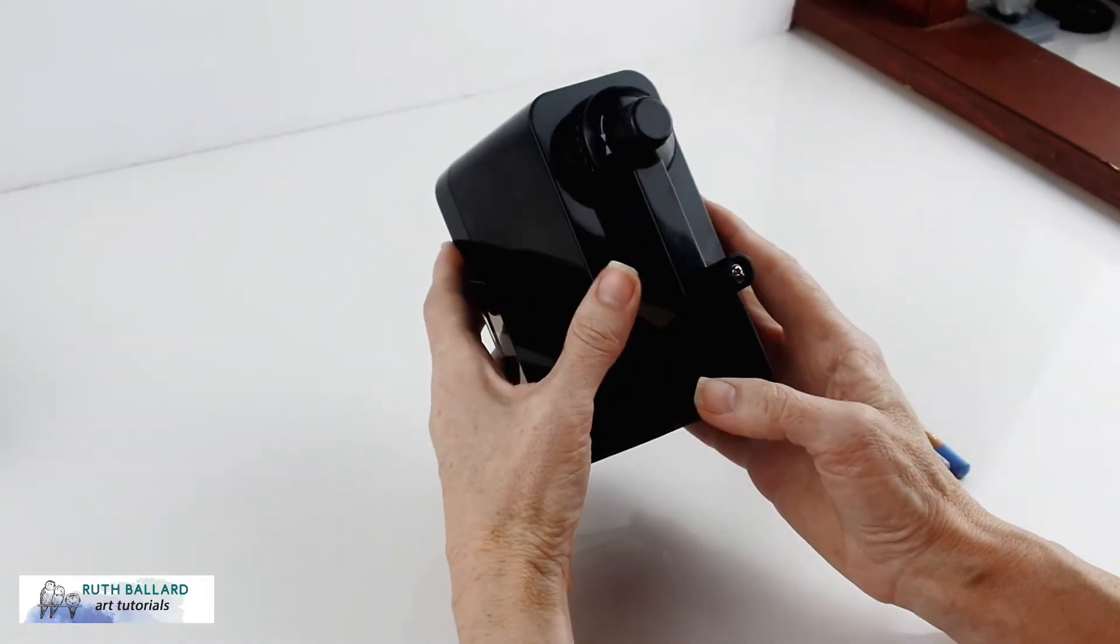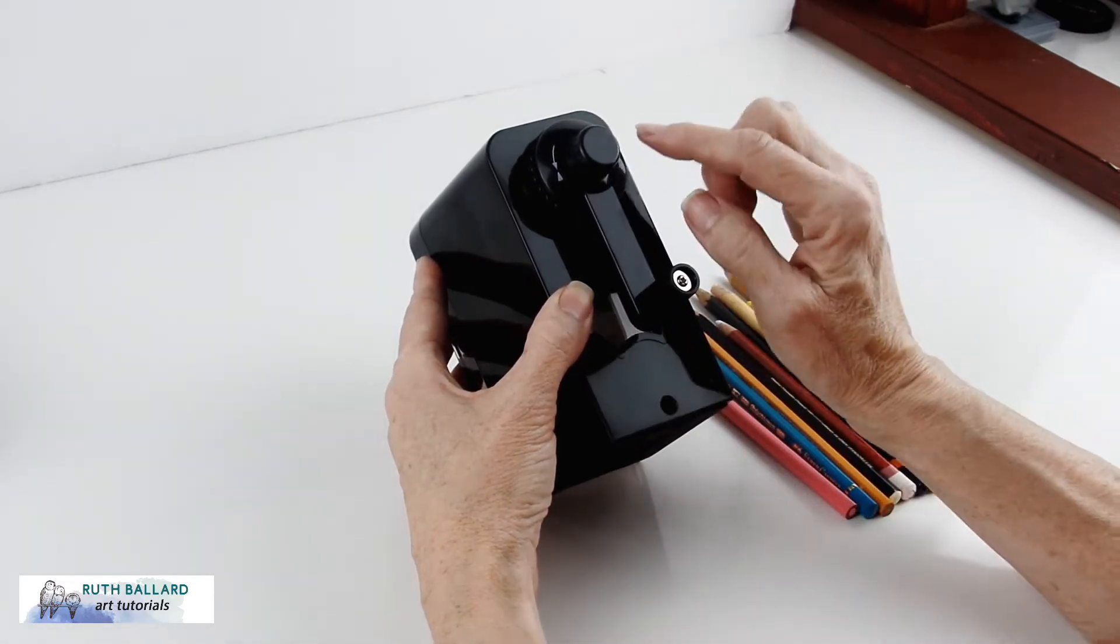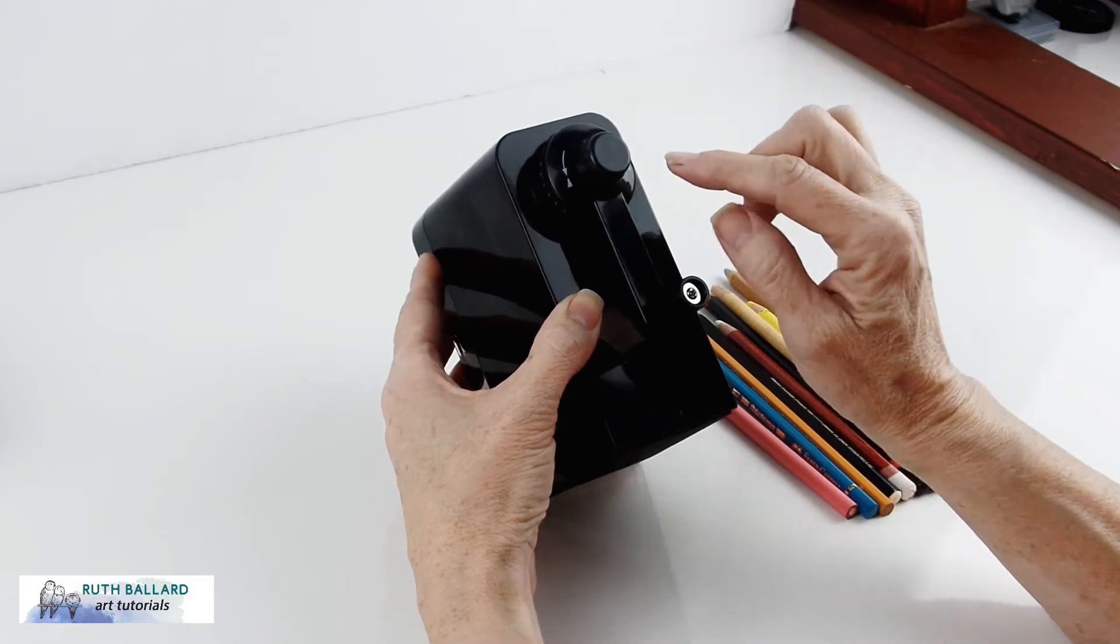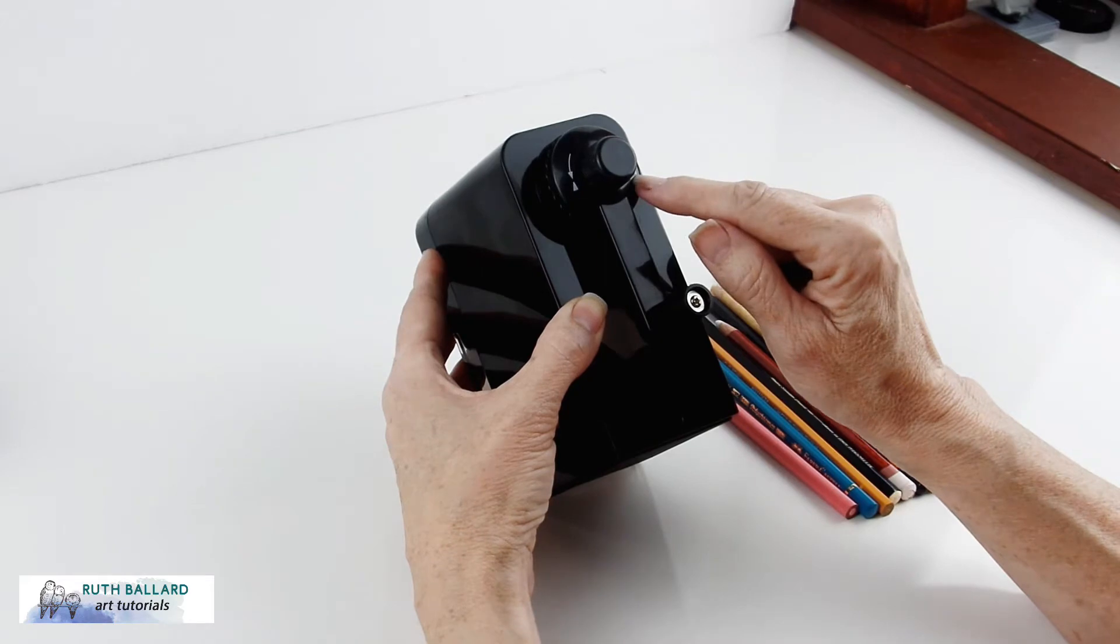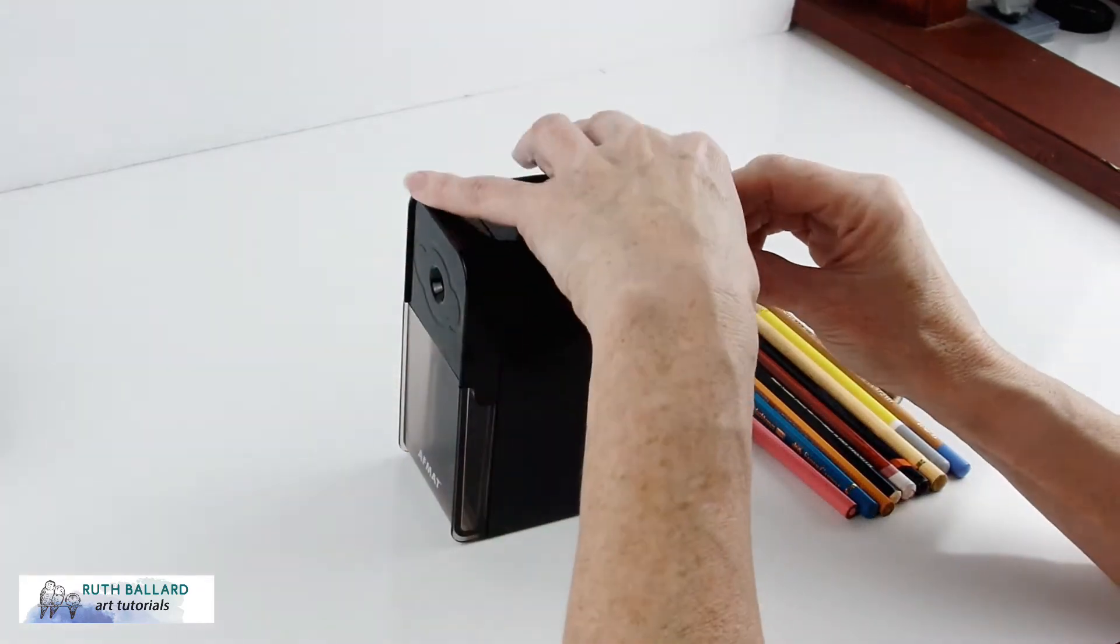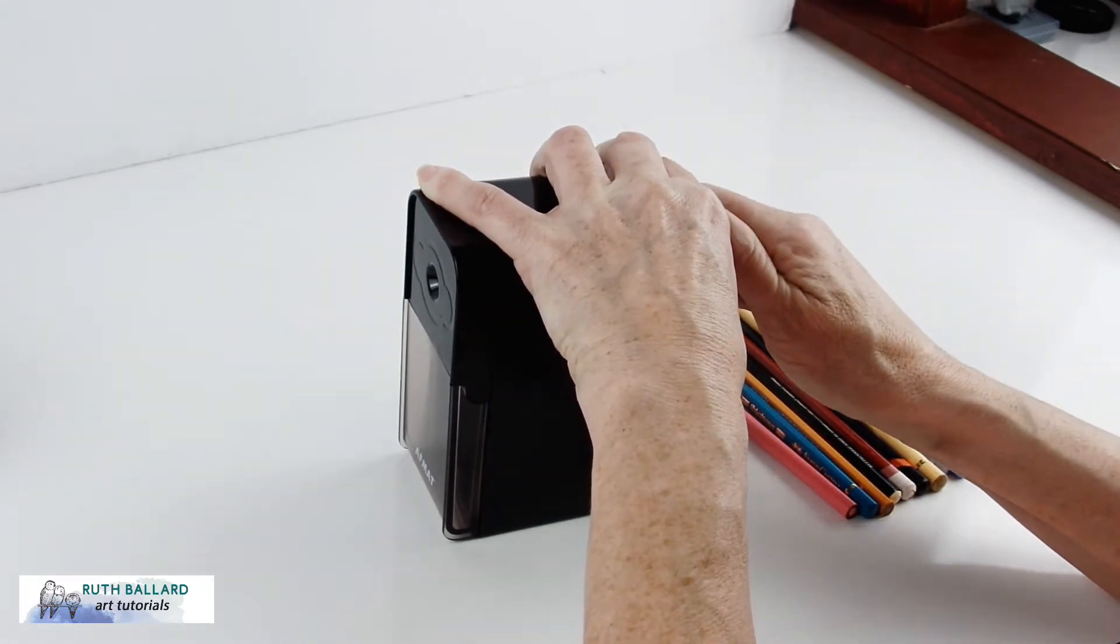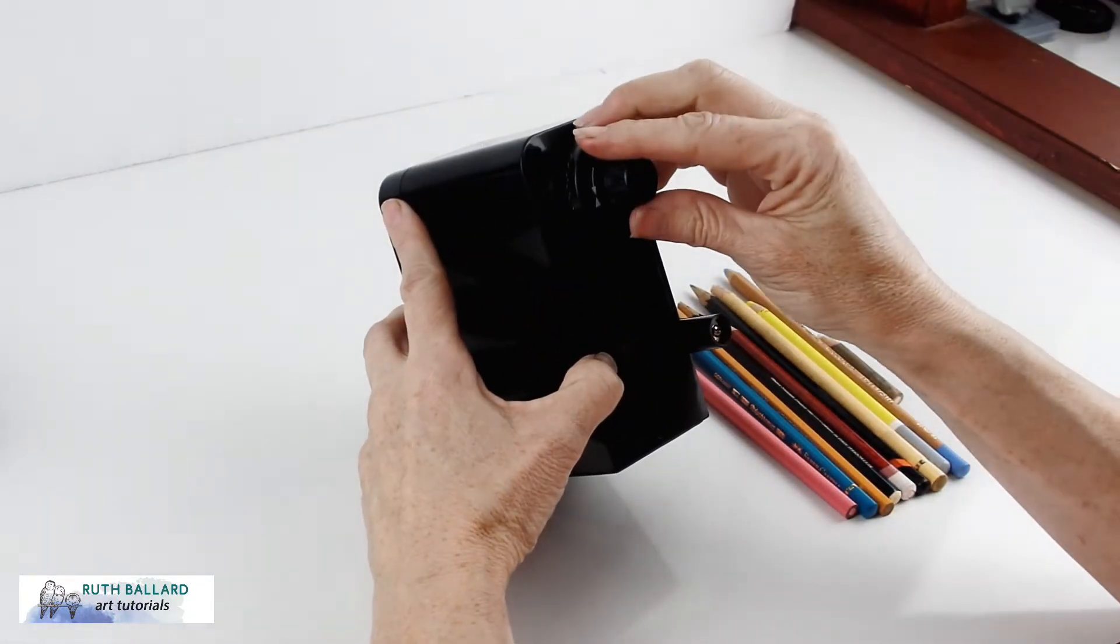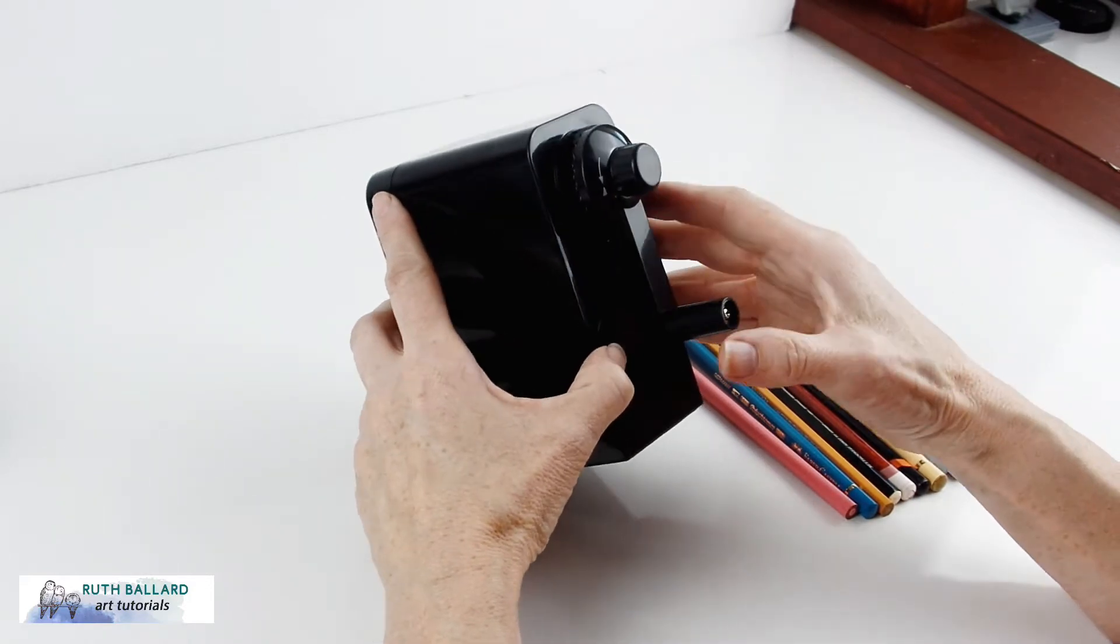It's a pretty simple design. There are two areas here for sharpening, so you can either sharpen to a fine point or a more blunt point, and you just turn the device, this little knob here, one way or the other way.